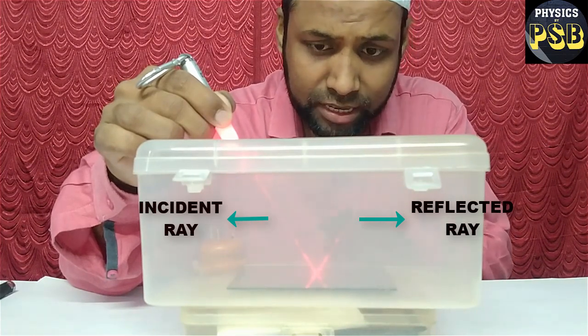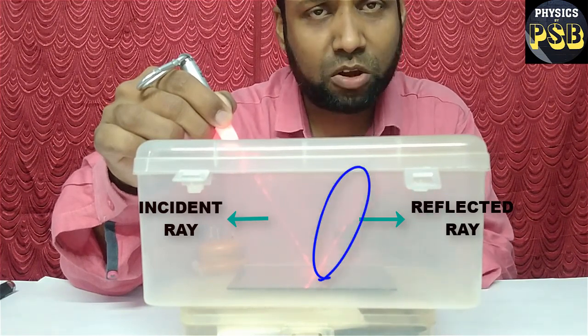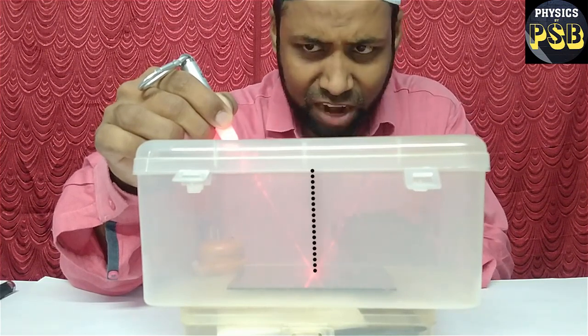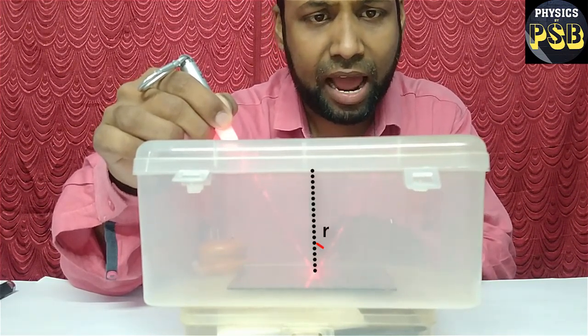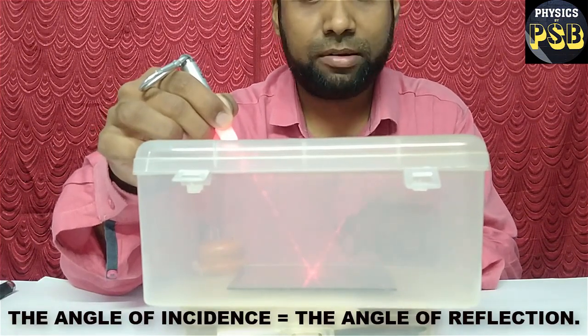This is called the incident ray. And after reflection, the ray of light is referred as reflected ray. If you look at this carefully, you may find that the angle of incident and angle of reflection will be equal to each other.